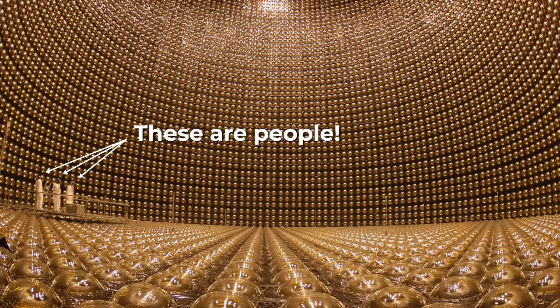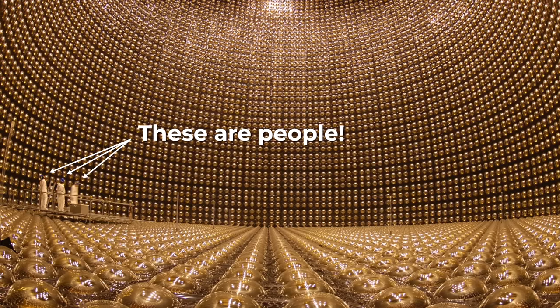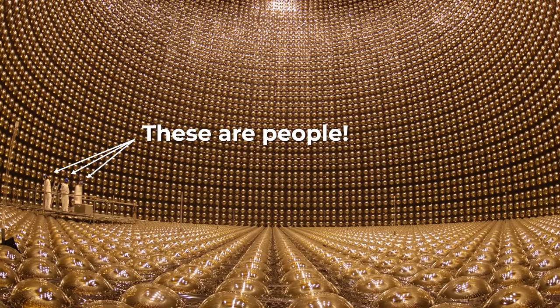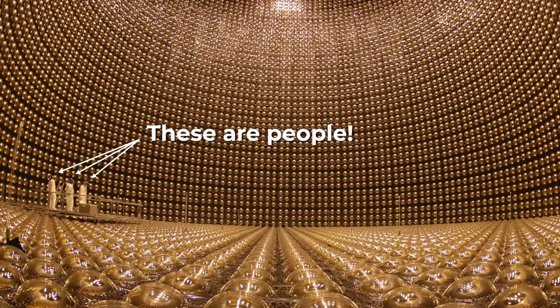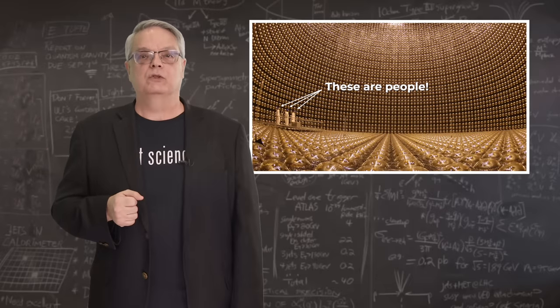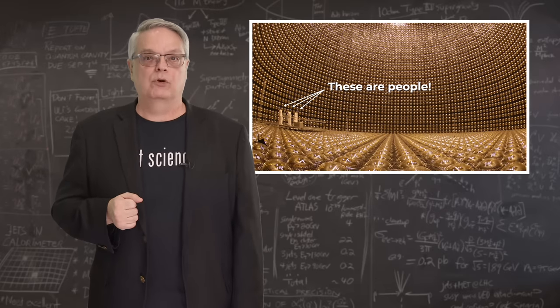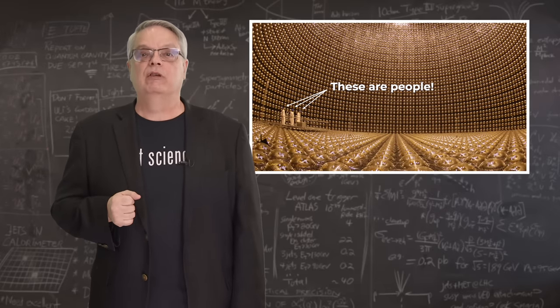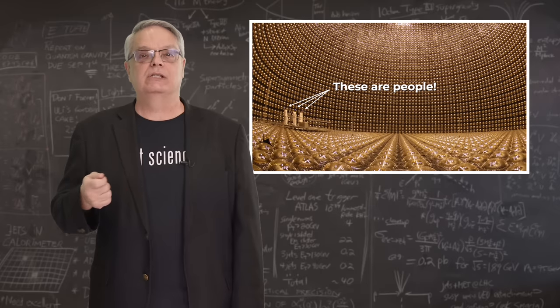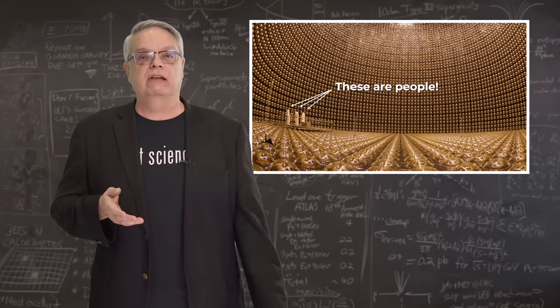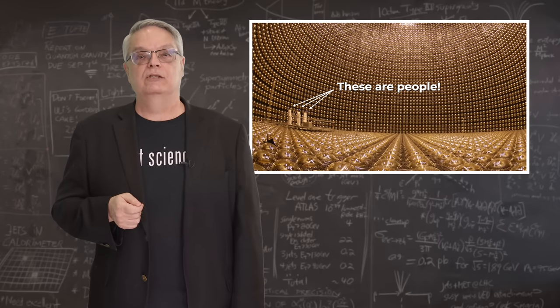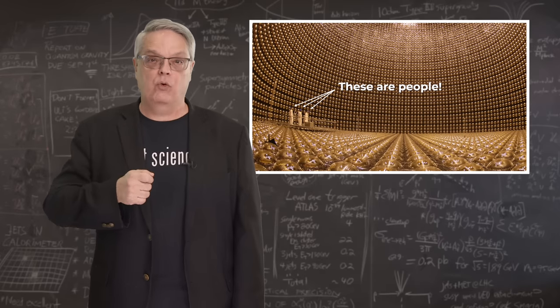In 1996, the Super K scientists turned their detector on and started looking for decaying protons, among other things. While they've made a lot of neutrino measurements, they haven't seen a single proton decay. From that, researchers have concluded that if protons decay into positrons, the lifetime for that decay is more than two times ten to the thirty-four years.